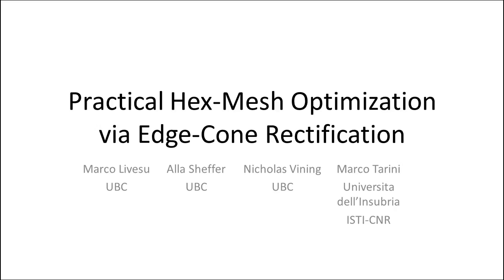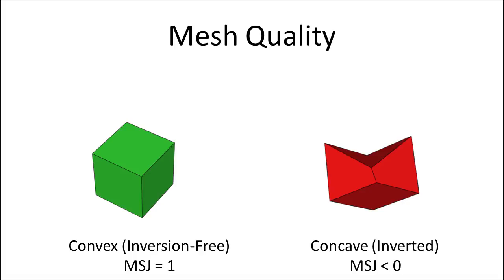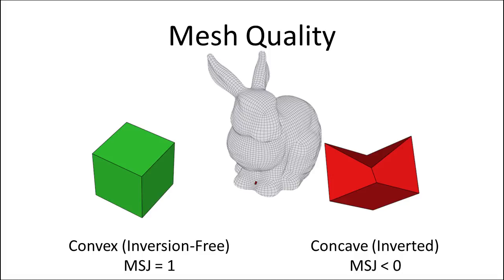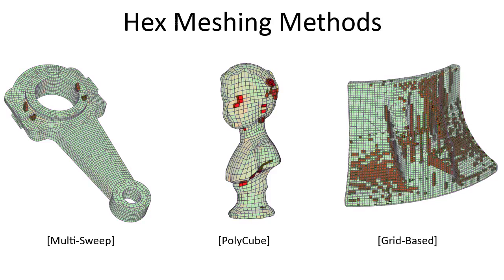Practical hex mesh optimization via edge cone rectification. Hexahedral meshes are the discretization of choice for many simulation techniques. Simulation accuracy depends on both average and worst element quality, measured by how much the shape of the hex elements deviates from a perfect cube. Even a single concave or inverted element makes a mesh unsuitable for simulation. While various hex meshing methods exist, their outputs frequently contain poorly shaped and inverted elements.